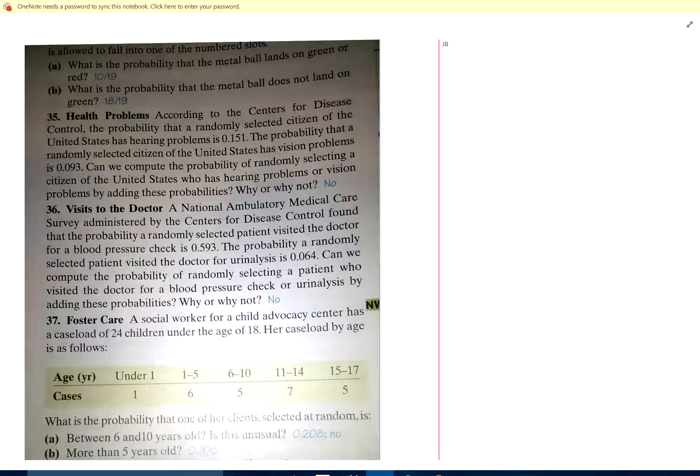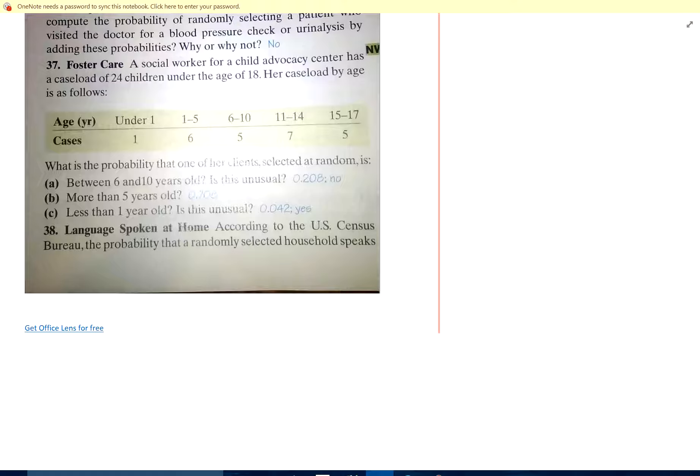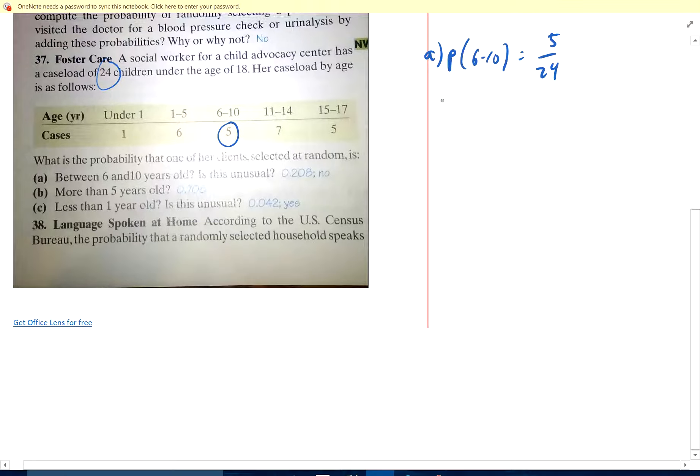Okay, there we go. Number 37. Foster care, social worker. Okay, so 24. My ages are here. What's the probability that one of her clients is between 6 and 10? So that's 5 out of 24. Probability that it's between 6 to 10 is 5 out of 24, because they said there's 24 children.